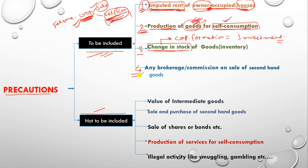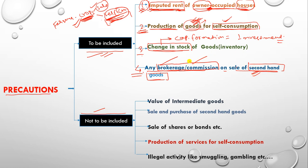The fourth point is any brokerage or commission on sale of second-hand goods. Whenever second-hand goods are sold, the help of a broker or commission agent is taken to facilitate the sale. These brokers and commission agents provide a service — they use their service to get the second-hand goods sold. In return they charge a fee, called brokerage or commission. This charge is being paid for their service, and therefore it is a kind of productive service, and its value is to be added to national income.